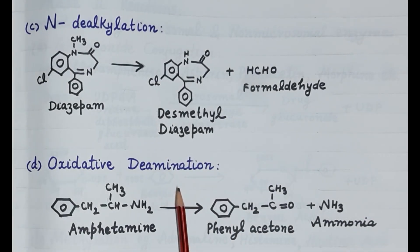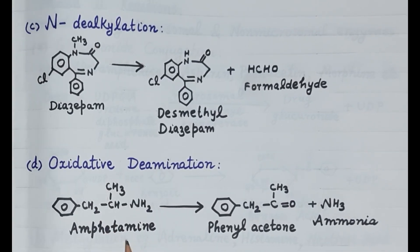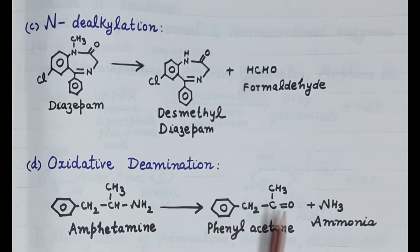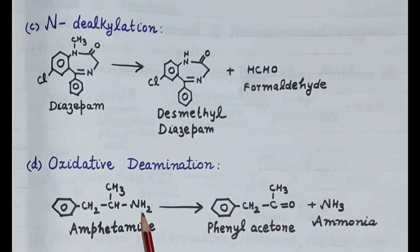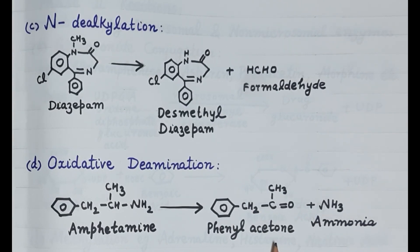The fourth type of oxidation reaction is oxidative deamination. Look at the structure of amphetamine — here oxygen is added and the amino group is removed. This reaction is called oxidative deamination. The metabolite produced, phenylacetone, is slightly polar and is further metabolized by the phase 2 reaction. This concludes the oxidation reactions.